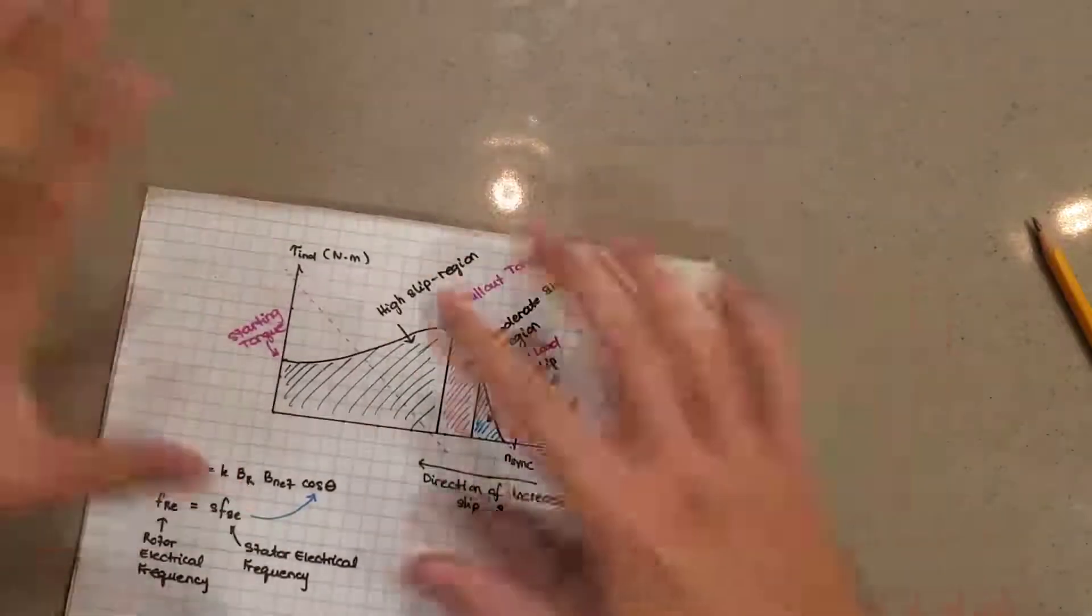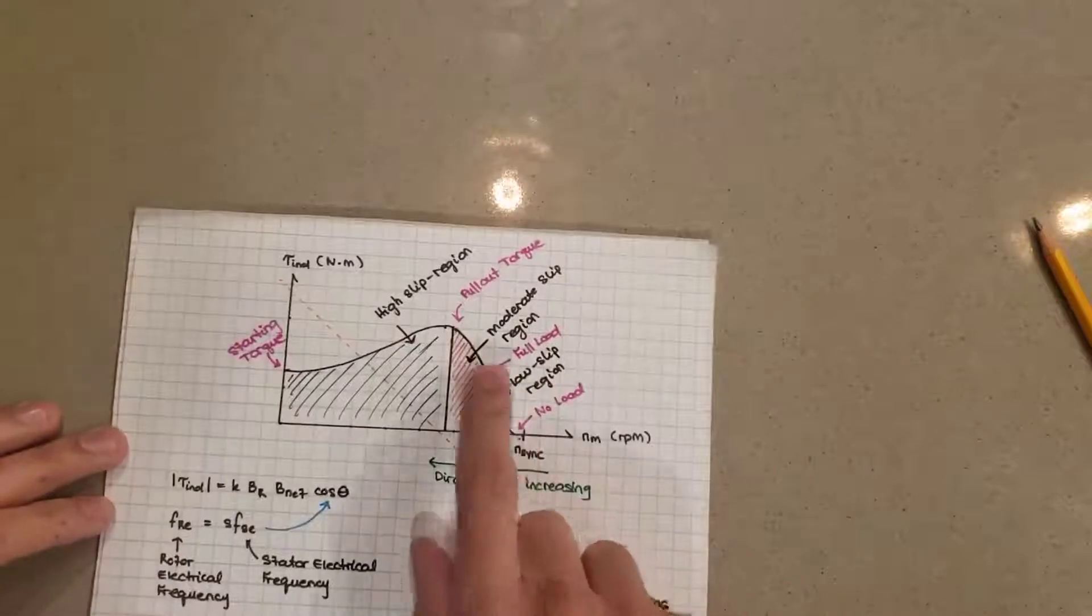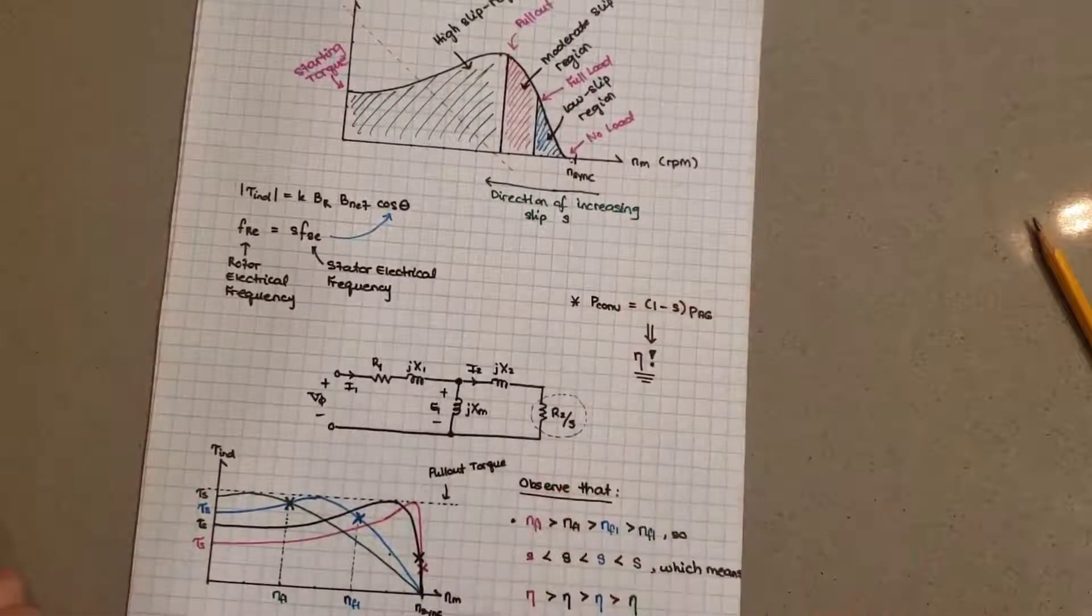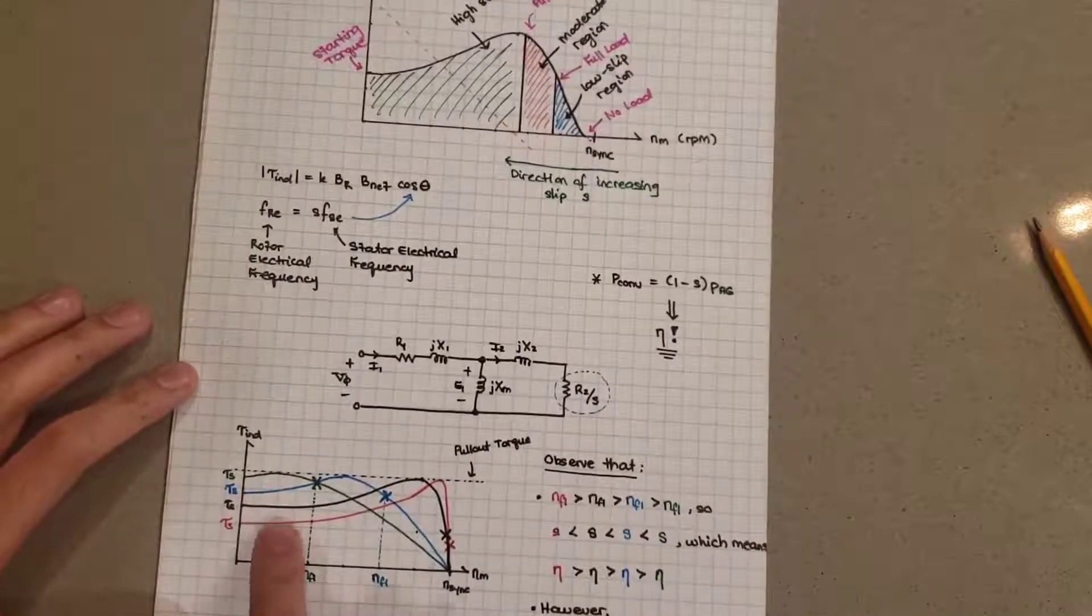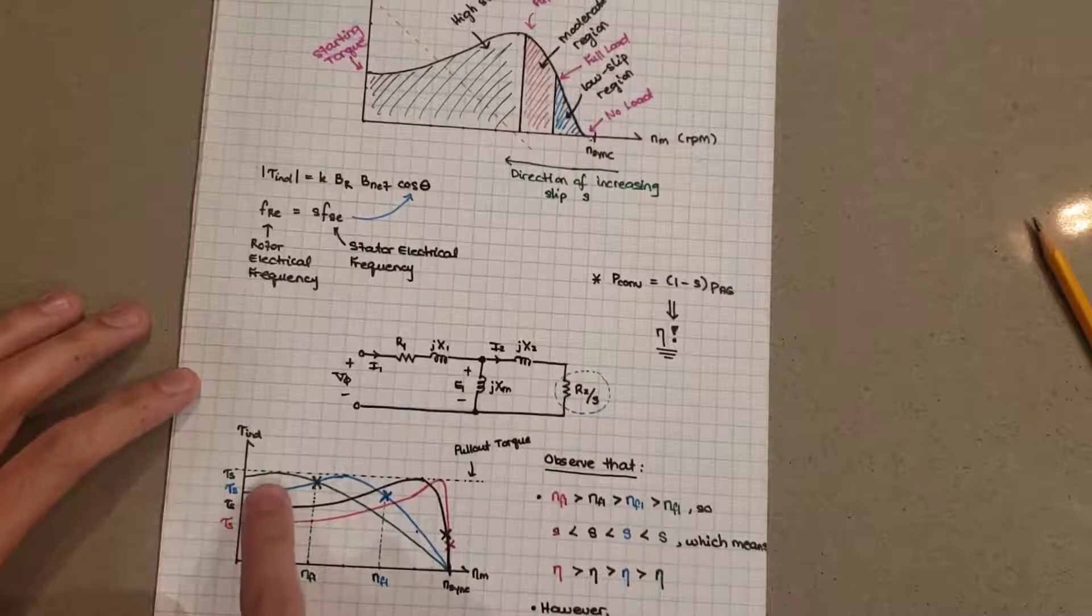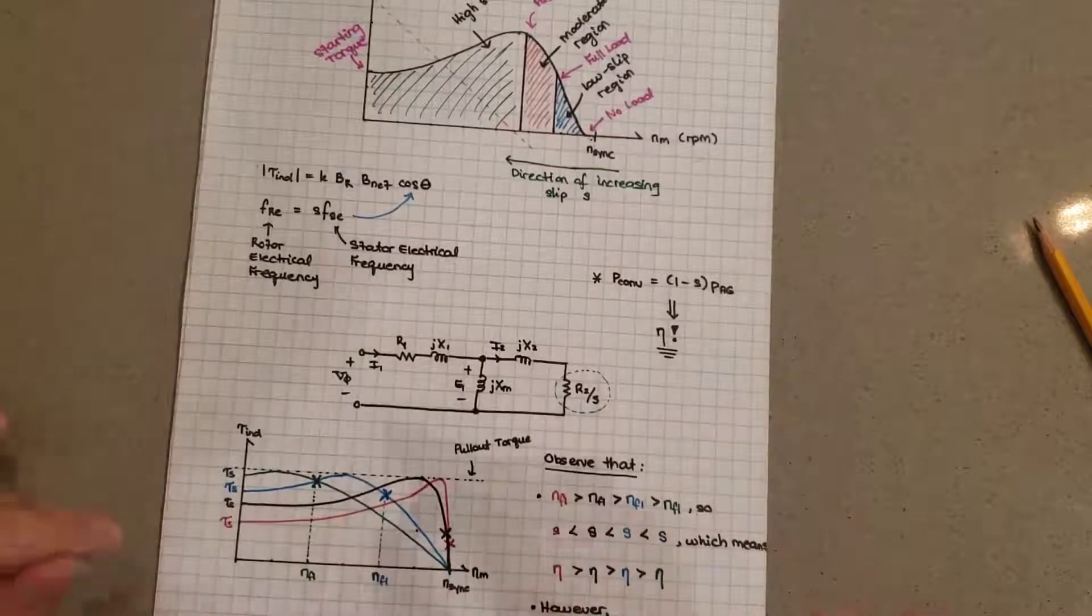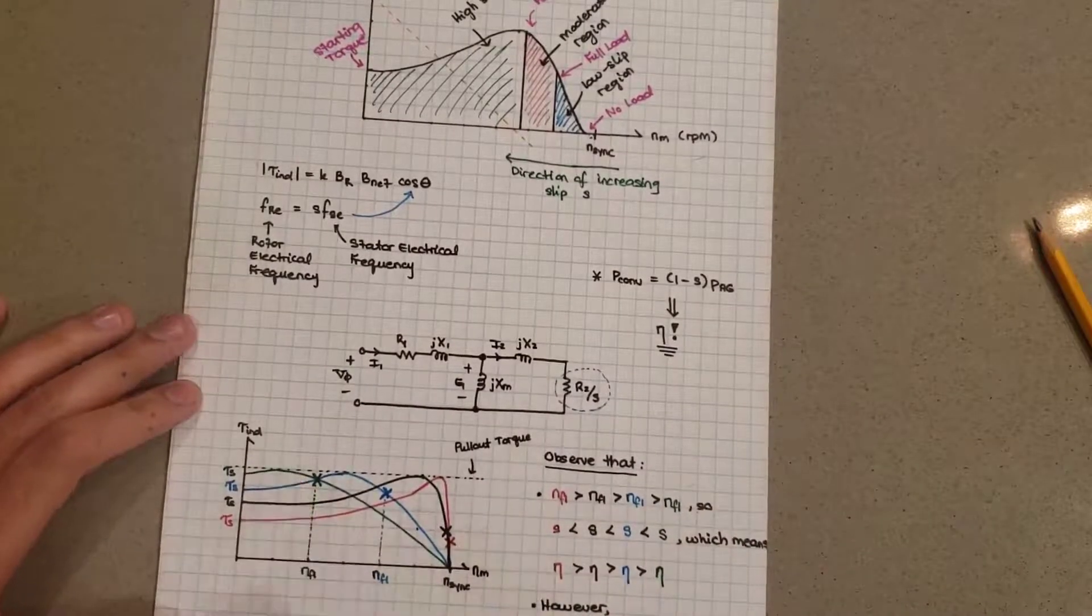We discussed the general behavior and why the curve looks like the way it is, and I said note these points, these are pretty important points. So let's go ahead and look at this graph over here. I have four different motors that have different torque speed curves. Or potentially, by the way, this could be one motor that you vary a certain quantity in. But for now, let's assume these are four different motors.